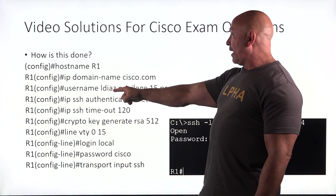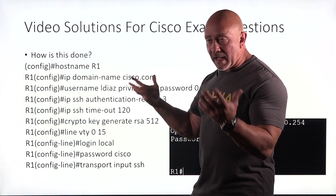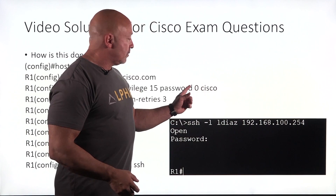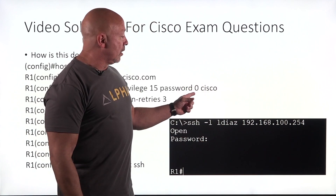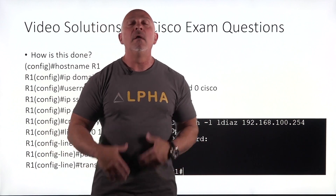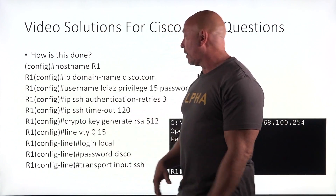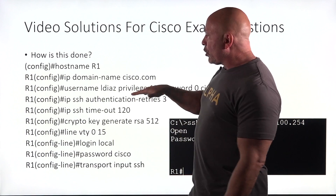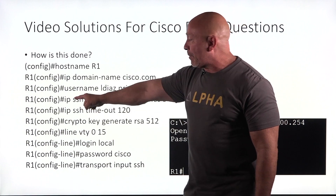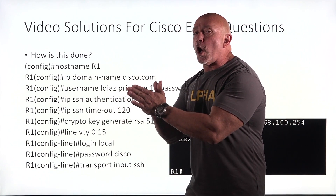Here's the username command: username LDS privilege 15, which is the highest privilege level, password 0 cisco — where 0 means plain text. You can use service password-encryption to encrypt it. We're using SSH anyway. So you've created a username. Now you do IP SSH authentication-retries — how many times you'll allow this person to try and log in — three times.